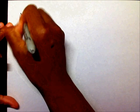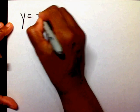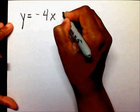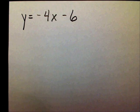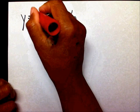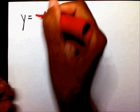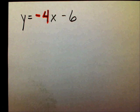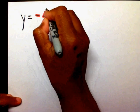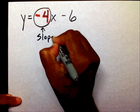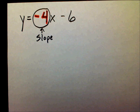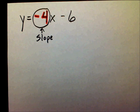So if you had y equals negative 4x minus 6, since this is already in slope-intercept form, we can immediately tell that negative 4 is your slope. A lot of people make a mistake and say negative 4x is your slope, but the slope is actually just negative 4.